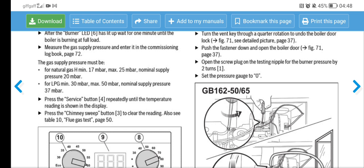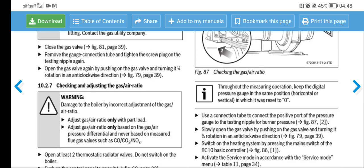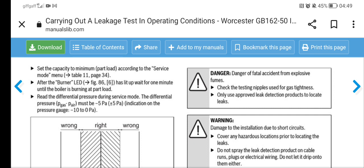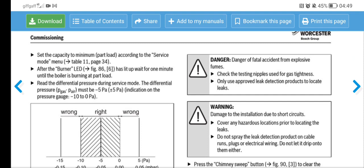Now it says open the screw plug on the test nipple for the burner pressure by two turns. Set the pressure gauge to zero, so zero your gauge. Use a connection tube to connect the positive port of the pressure gauge to the test nipple for burner pressure. It says set the capacity to minimum, that is part load, according to the service mode. After the burner has lit up, wait for one minute until the boiler is burning at part load. Read the differential pressure during service mode. The differential pressure must be minus five Pa indication on pressure gauge, minus 10 to naught Pa.